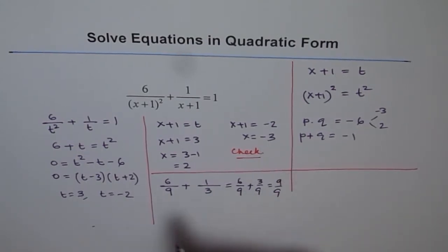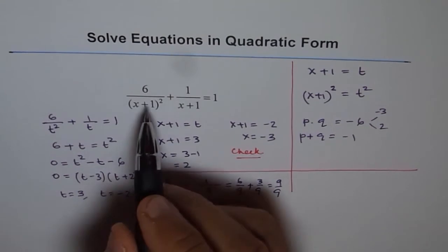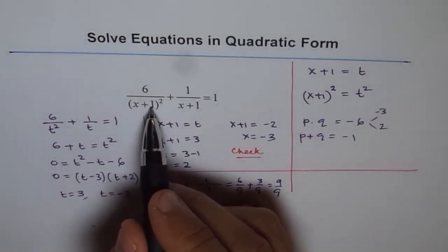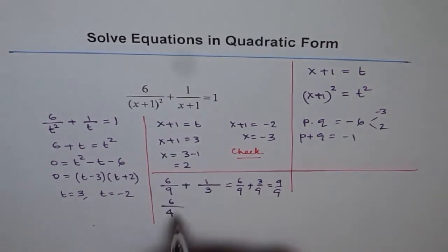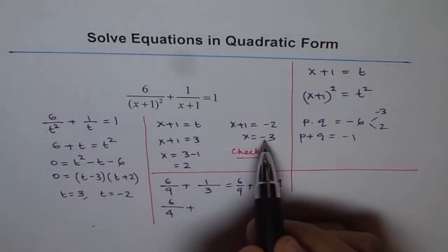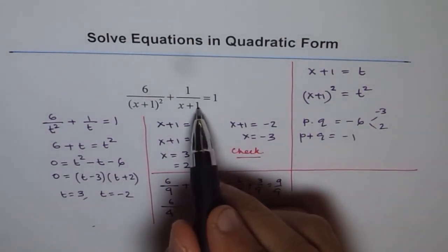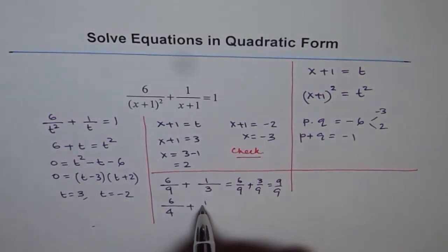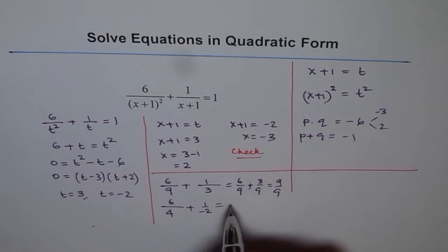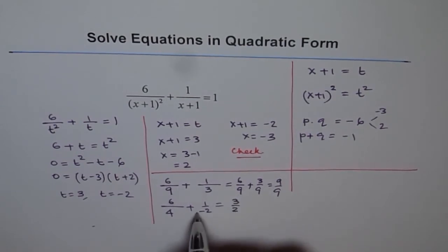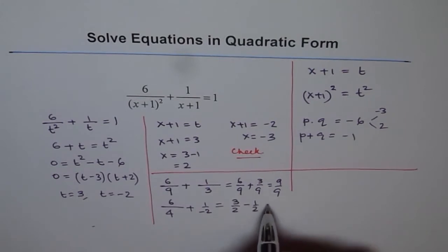How about minus 3? So 6 over minus 3 plus 1 is minus 2. Minus 2 square is 4. So we get 4 here. Plus minus 3 plus 1 is minus 2. So we get 1 over minus 2. So that means 6 over 4 can be reduced as 3 over 2 minus half. And 3 by 2 minus half is 1 which is right side. So that is also perfect.